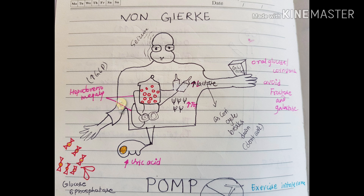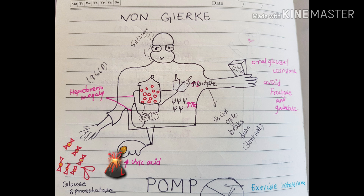There is increased lactate, so all the milk bottles in the image represent lactate. The tridents represent triglyceride — so there is increased triglyceride as you can see in this image. You can also see a small gout lesion, which represents increased uric acid.